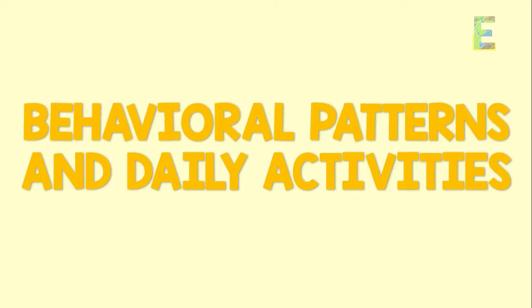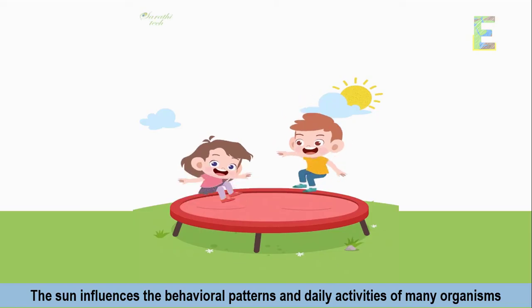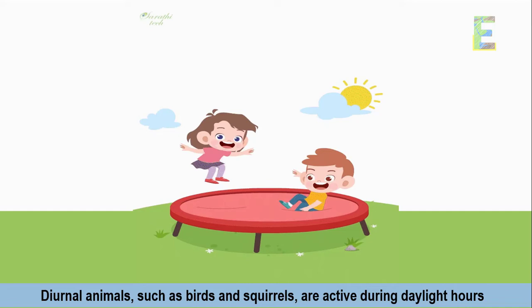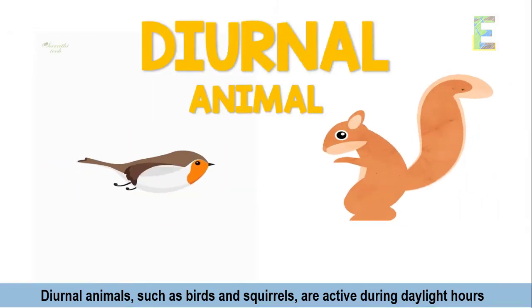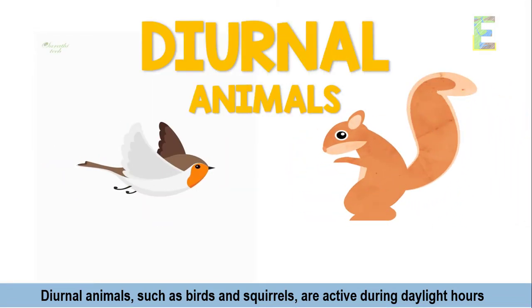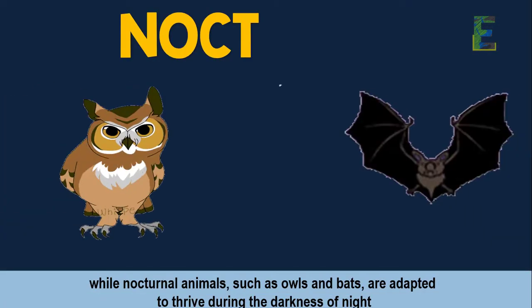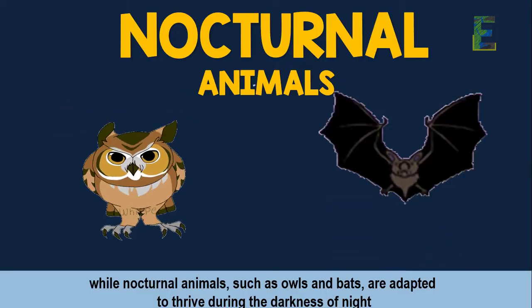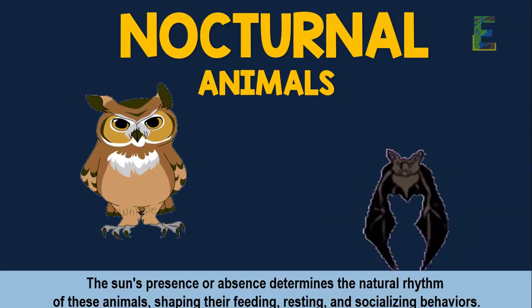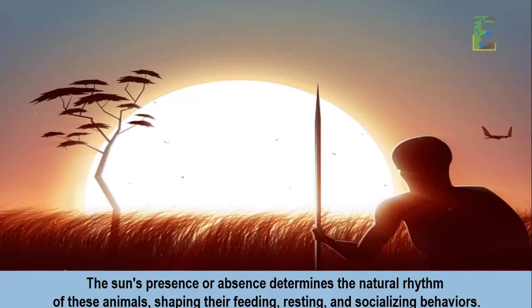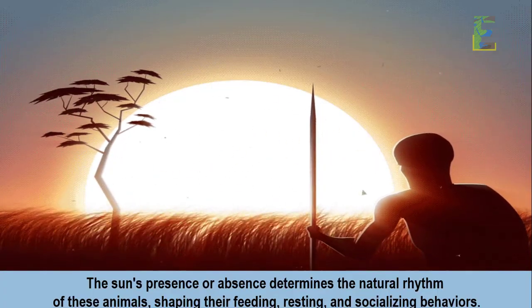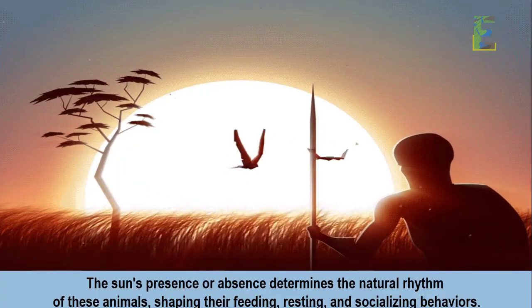Behavioral Patterns and Daily Activities. The sun influences the behavioral patterns and daily activities of many organisms. Diurnal animals, such as birds and squirrels, are active during daylight hours, while nocturnal animals, such as owls and bats, are adapted to thrive during the darkness of night. The sun's presence or absence determines the natural rhythm of these animals, shaping their feeding, resting, and socializing behaviors.